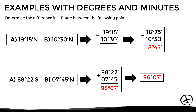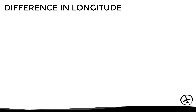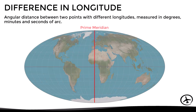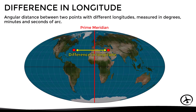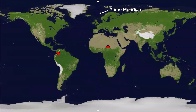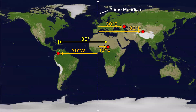Having seen the difference in latitude, let's now look at the difference in longitude. The difference in longitude is defined as the angular distance between two points with different longitudes, measured in degrees, minutes, and seconds — so it is basically the same as the difference in latitude, but now in terms of longitude. For example, two points with longitudes of 70 degrees west and 10 degrees east would have a difference in longitude of 80 degrees. And in another case, where the longitudes of the points are 90 degrees east and 50 degrees east, the difference in longitude would be 40 degrees.